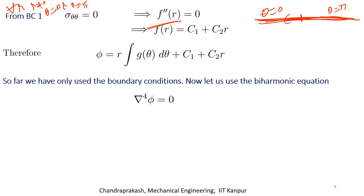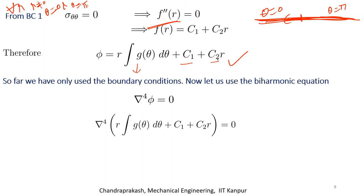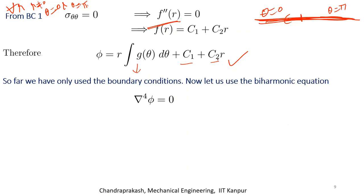We have three unknowns: the dependence of G on theta, and the constants c1 and c2. I will substitute this general form into the biharmonic equation to determine G(theta). So far, without using the previously derived general solution, I have deduced the form of phi purely from the boundary conditions and the Cauchy traction definition.